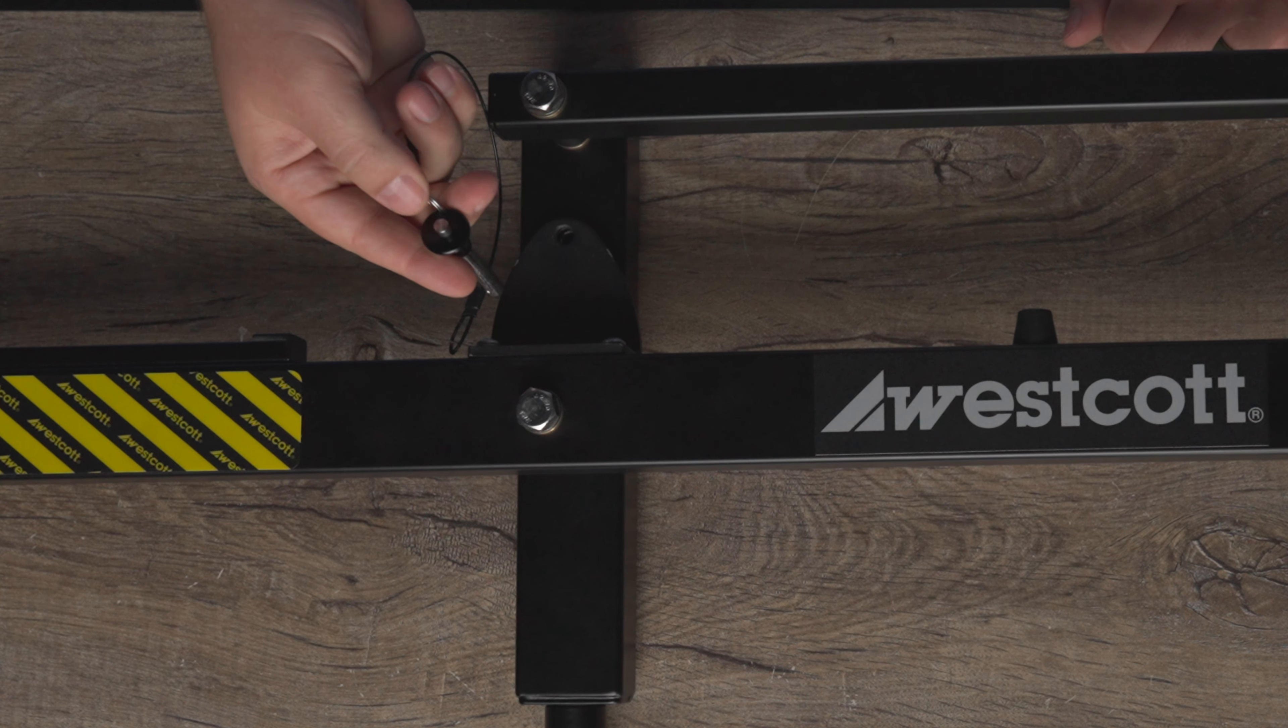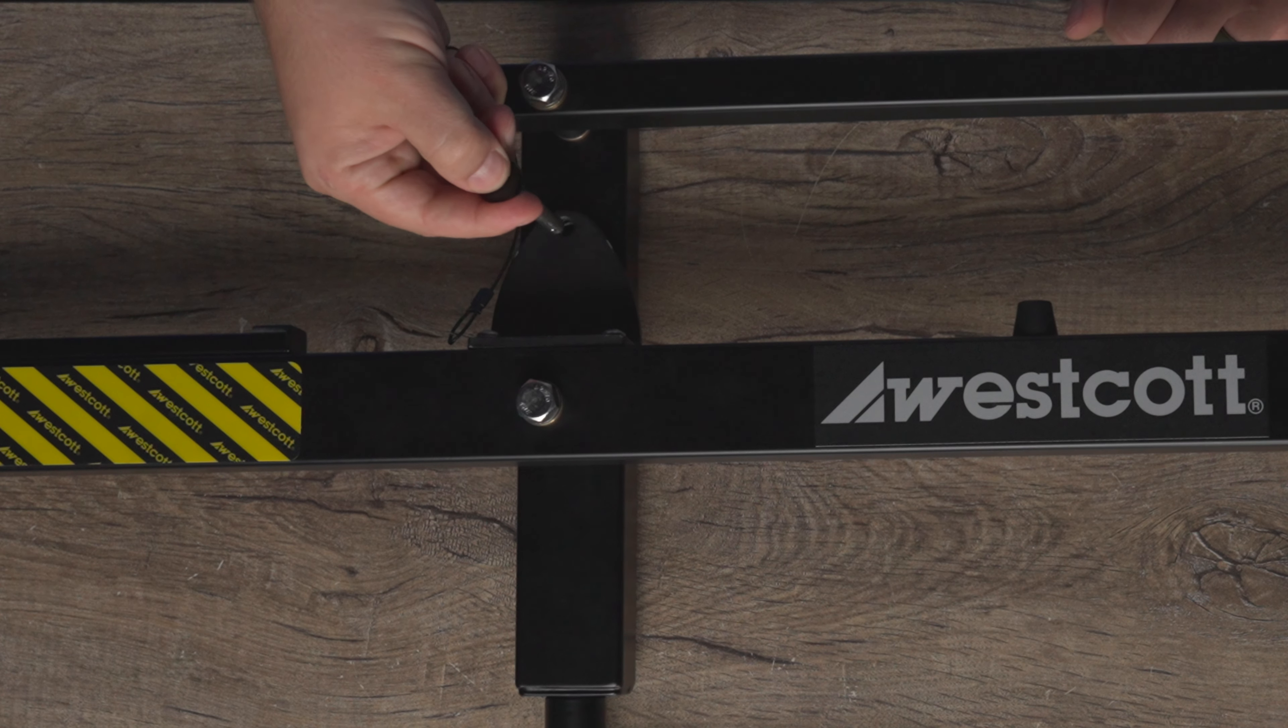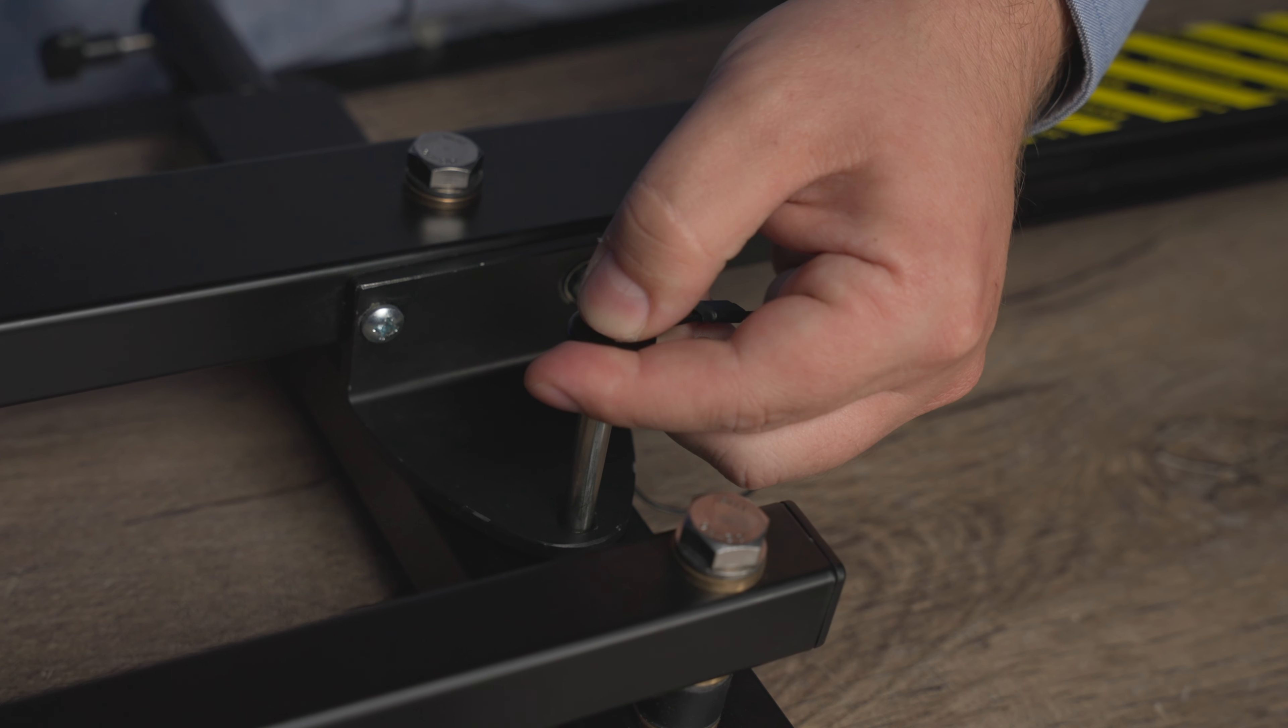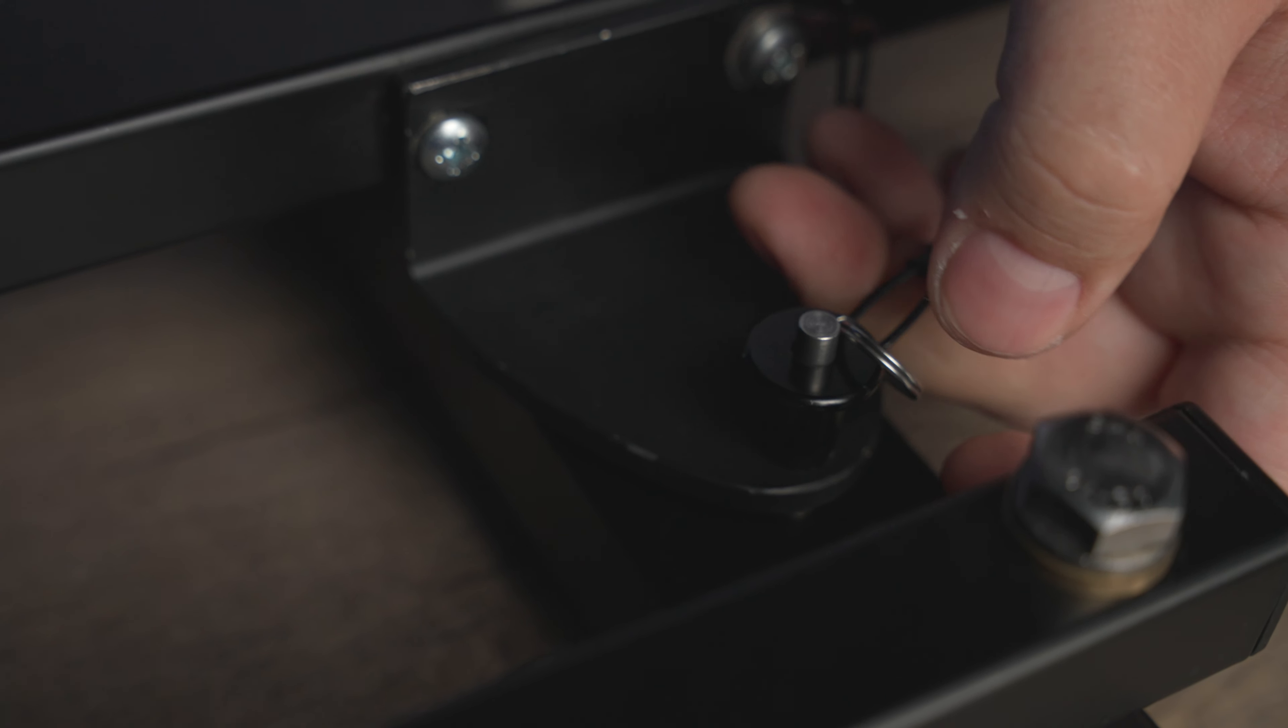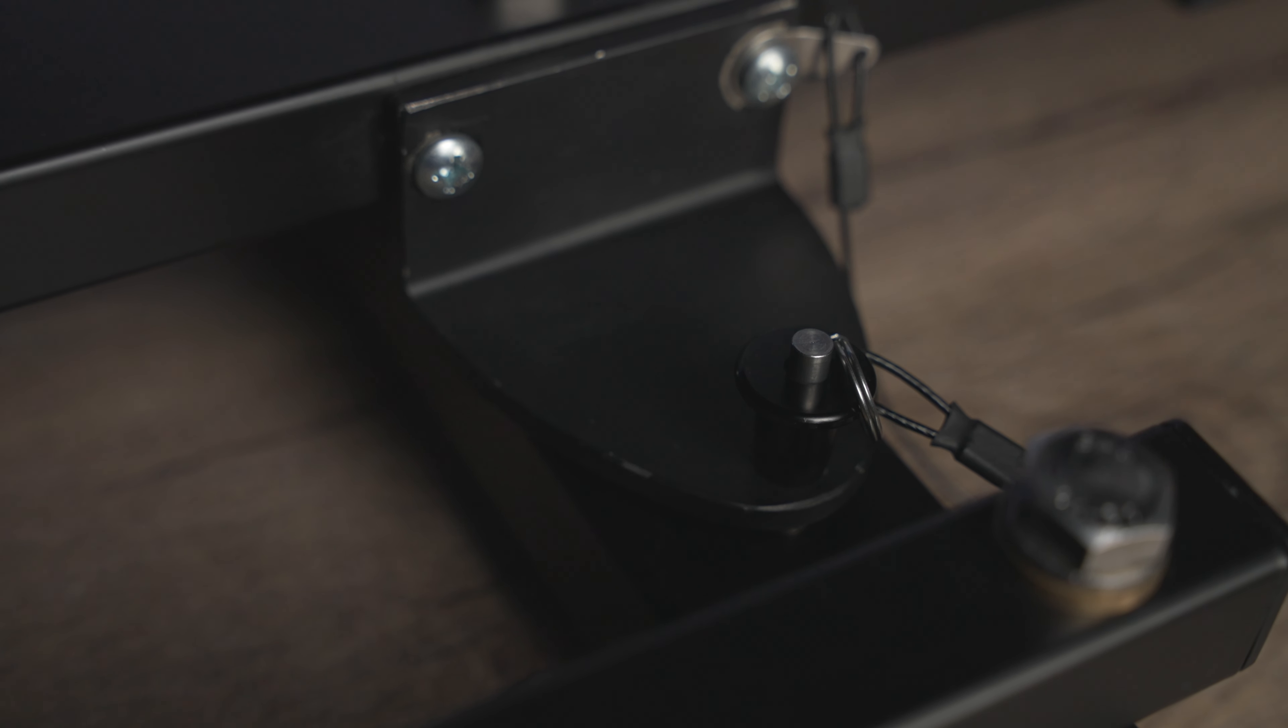Lay the EZBoom horizontally on a flat surface. Attach the locking pin by pressing the button on the pin and inserting it through the center column in the half-circle-shaped support plate. Ensure the locking pin is fully inserted and its head is flush with the support plate.